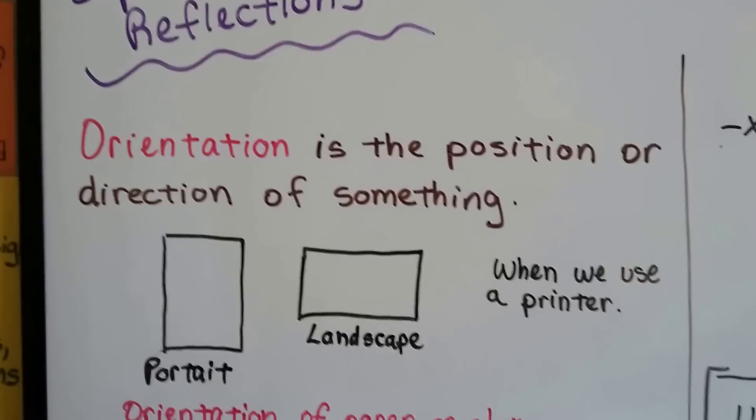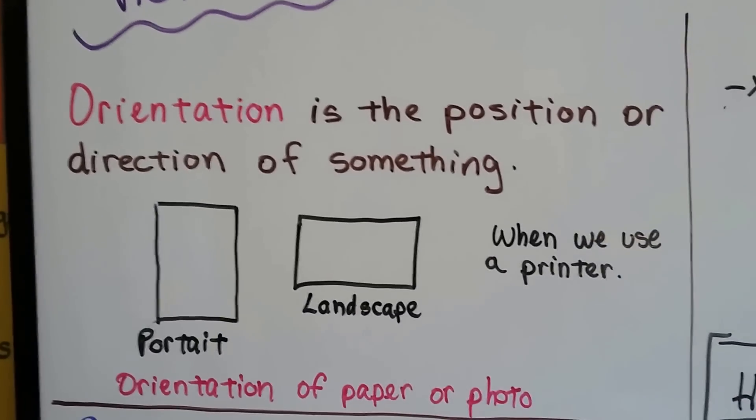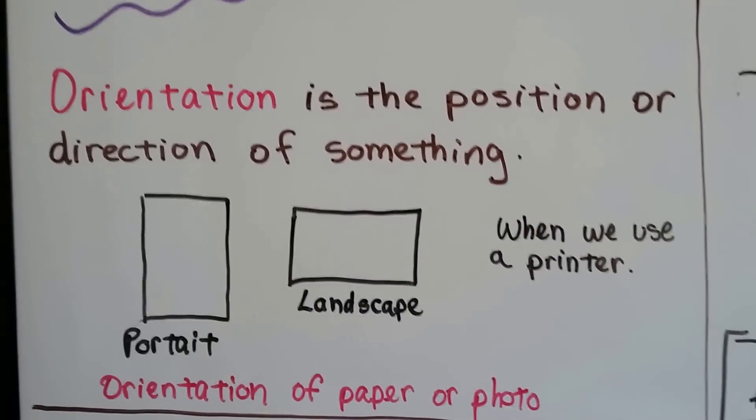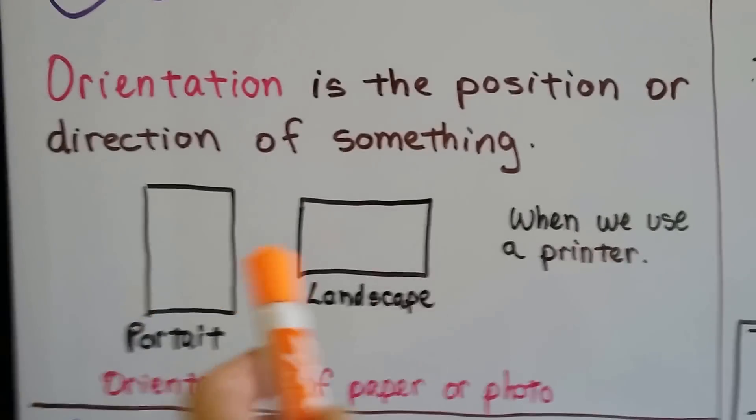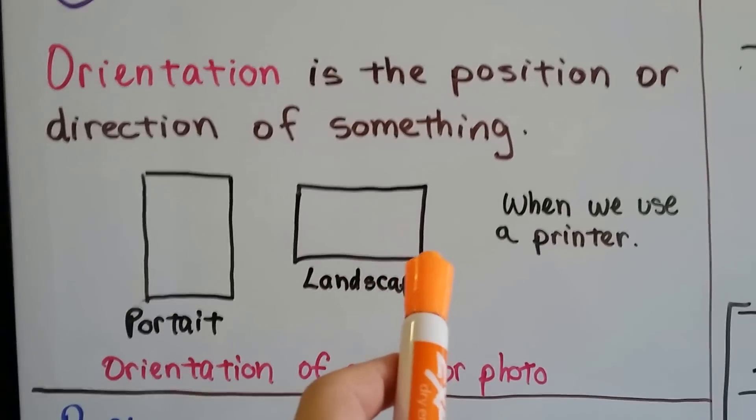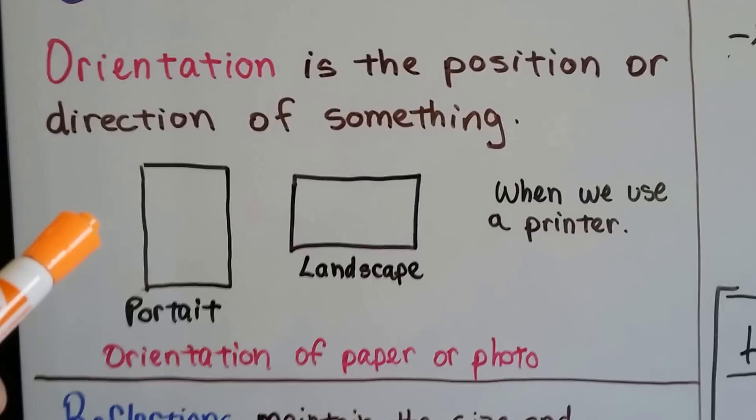Orientation is the position or direction of something. Have you ever gone to print a piece of paper and it asks you if you want it printed in portrait or landscape? Portrait is when it's standing tall and landscape is when it's going side by side like this, it's laying down. Well, that's the orientation of the paper.